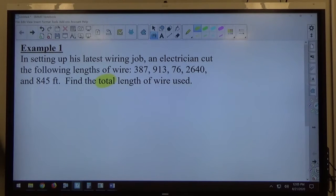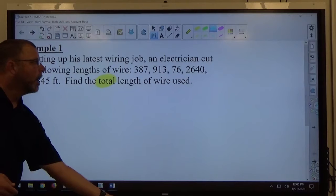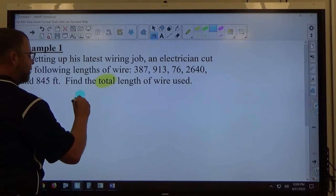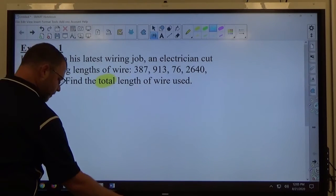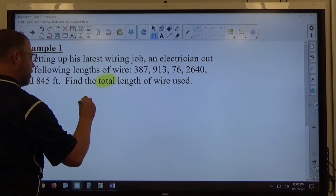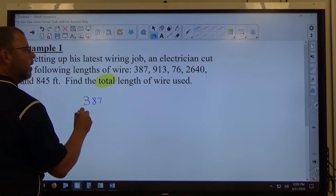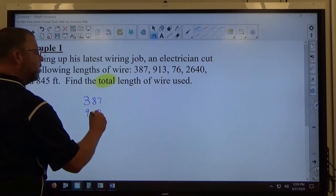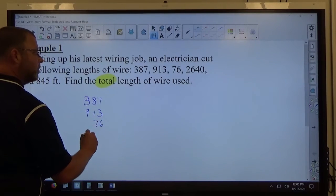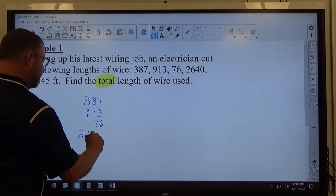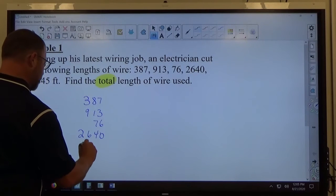Anytime you total something, you're adding it up. So, we have all these wire lengths here. I'm going to do 387, 913, 76, 2,640, 845.